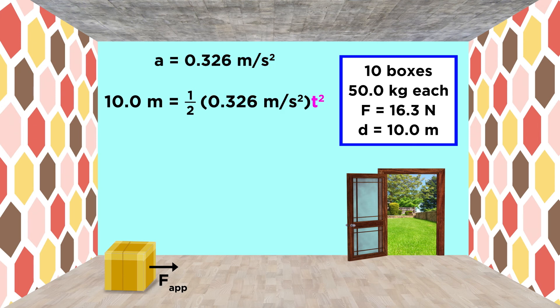That leaves this t squared term. We simplify, and then take the square root of both sides, to get seven point eight three seconds.